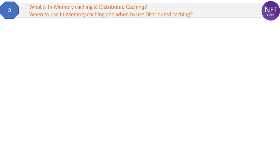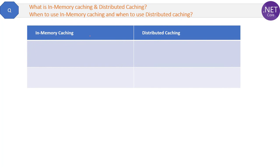This is the next level question on caching. If you have any confusion on basic caching, you can check out my previous videos. The question here is: what is in-memory caching and distributed caching, when to use in-memory caching, and when to use distributed caching? Let's see the differences first — by the differences we can understand what these two types are.